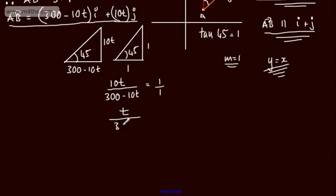So if I just divide by 10, t over 30 minus t will equal 1. So I'm just solving this equation. t equals 30 minus t. 2t equals 30. And then t equals 15. So our answer will be 15 seconds.